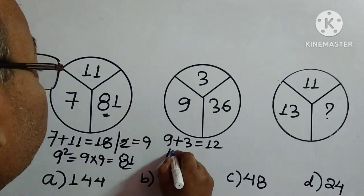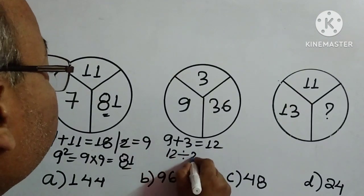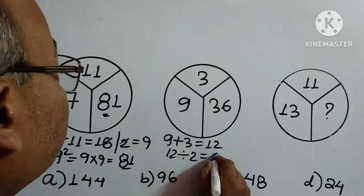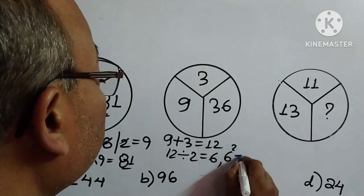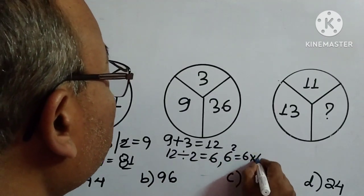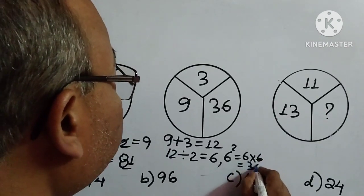Now, we will divide 12 by 2. So what is the result? 6. And then we will square it. So 6 squared is 6 into 6, which is equal to 36, which is given.